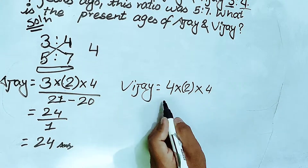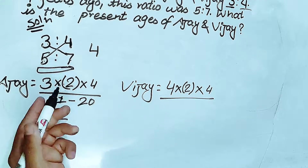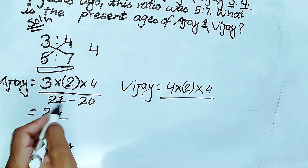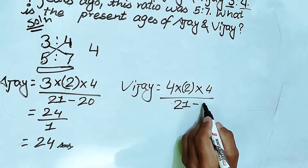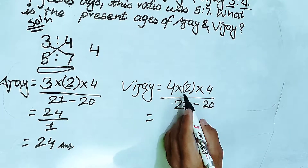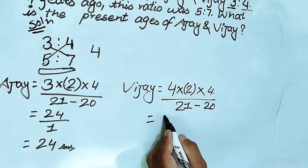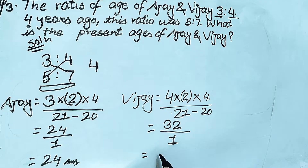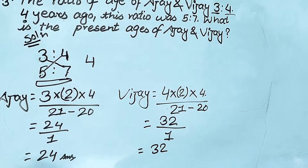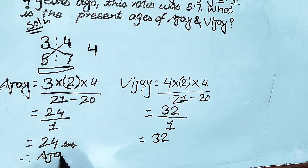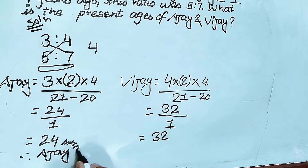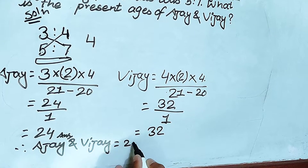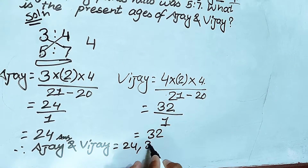This is the same process. 21 minus 20 equals 1. 48 minus 32 equals 16. 32 divided by 1, so it is 32. Therefore, the answers are 24 and 32.